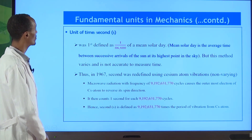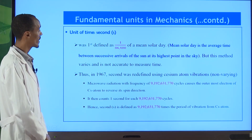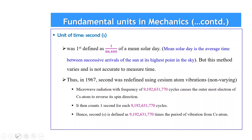The unit of time is the second. Initially, one second was defined as 1/86,400 of the mean solar day — the average time between successive arrivals of the sun at its highest point in the sky. But because of motion in the universe, this is not reliable everywhere and every time, so this method did not work.